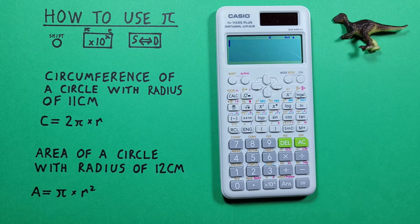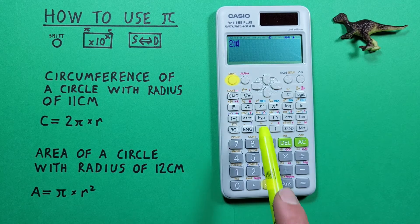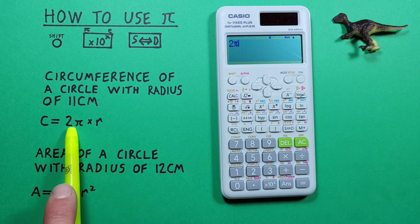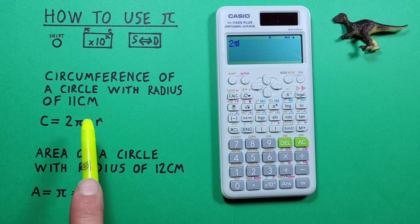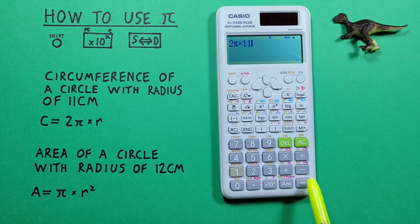So we start by entering our 2 and then shift times 10 to the x to get our pi, and then we multiply that by our radius of 11, so times 11, and press equals.